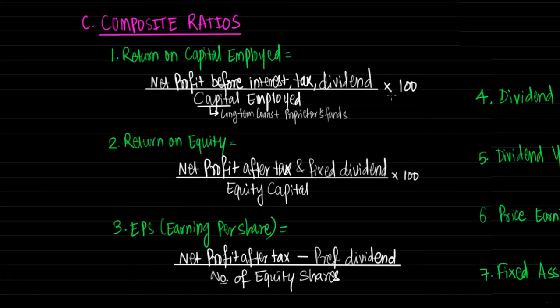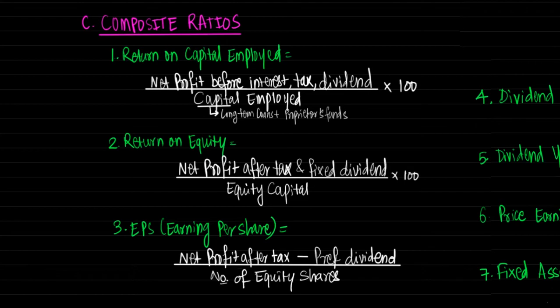Now let's move to composite ratios, where items of the balance sheet are compared with items of the revenue statement. First ratio is return on capital employed, calculated as net profit before interest, tax and dividend divided by capital employed. Capital employed means long term loans plus proprietor's funds. Its significance is that it gives a clear index of utilization of assets' earning capacity and measures overall profitability from the total funds employed.